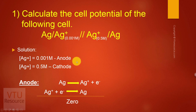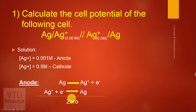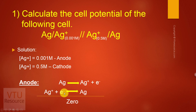The electrode reactions are: at anode, Ag gives Ag⁺ and one electron; at cathode, Ag⁺ accepts that electron and undergoes reduction to give Ag. The net reaction is zero. Cell reactions are important because the number of electrons lost during oxidation and gained during reduction gives us n. Here n equals 1.